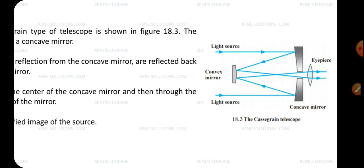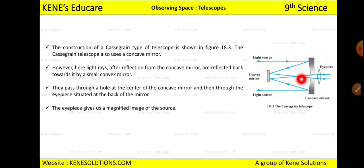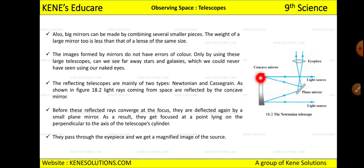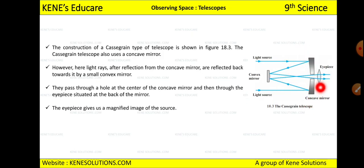By following the diagram, you can clearly understand the mechanism of both types of telescopes. In the Cassegrain, there is a hole in the concave mirror through which the light passes. The eyepiece is at the back of the mirror, and the final result is a magnified image of the source.